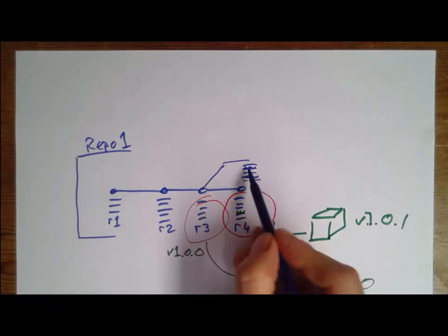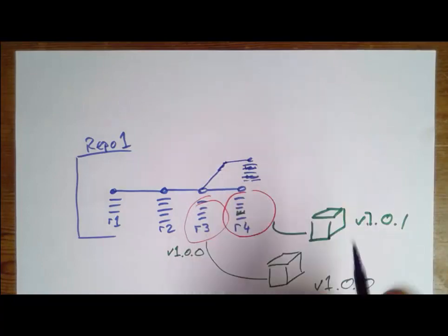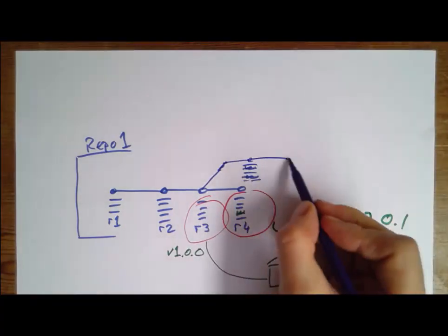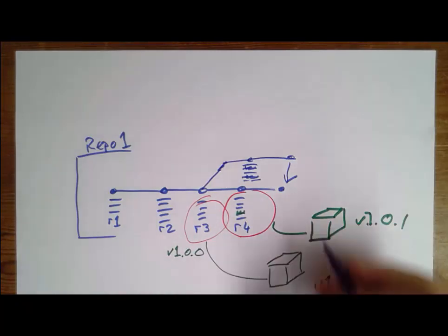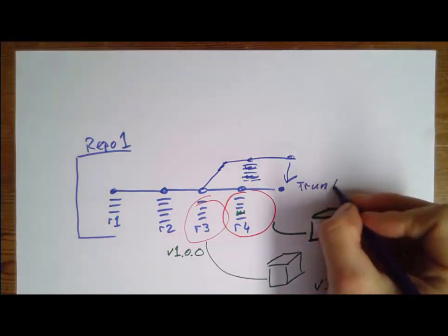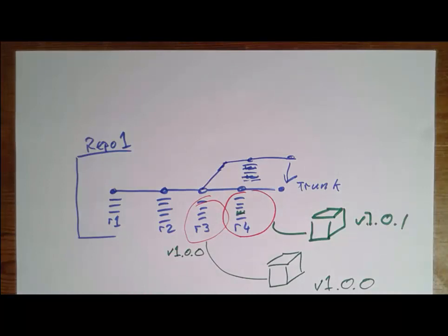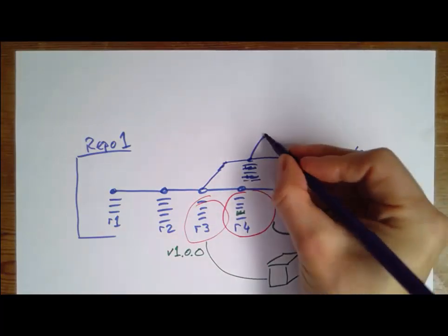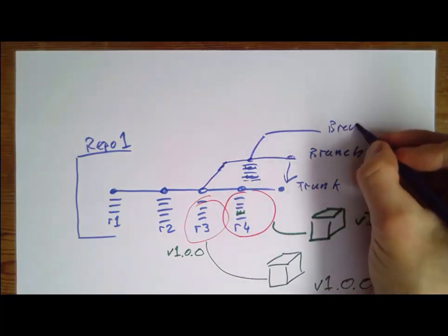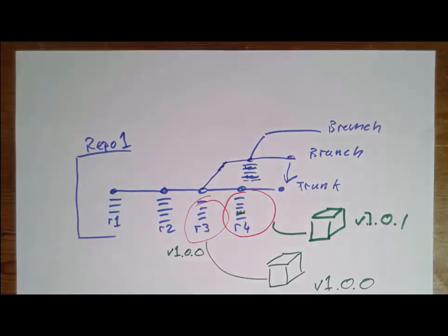What we would do is branch revision 3, which is version 1.0.0, and create a new instance of the product within the same repository. We'd work on that branch separately, making significant changes without contaminating our official releases. When that branch is stable, we might merge it back into the trunk — the main or core set of files — while branches may even have branches off them for new features or experimental updates.